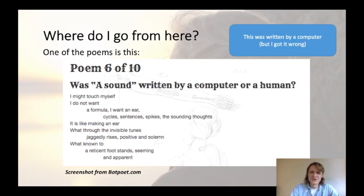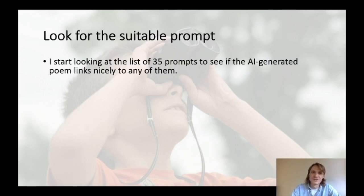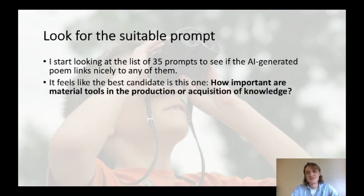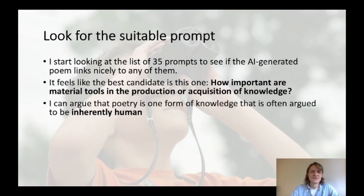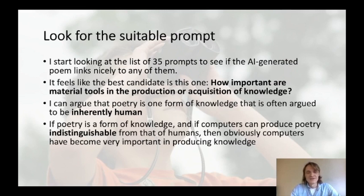The object seems interesting — I can use it as the first object in my exhibition, but I still don't have a prompt. I scan the list of 35 IA prompts to see what fits nicely. The best candidate seems to be: 'How important are material tools in the production or acquisition of knowledge?' I can argue, using this example, that poetry is one form of knowledge. According to one viewpoint, a work of art contains some form of knowledge — so the poem bears some sort of knowledge we can claim.